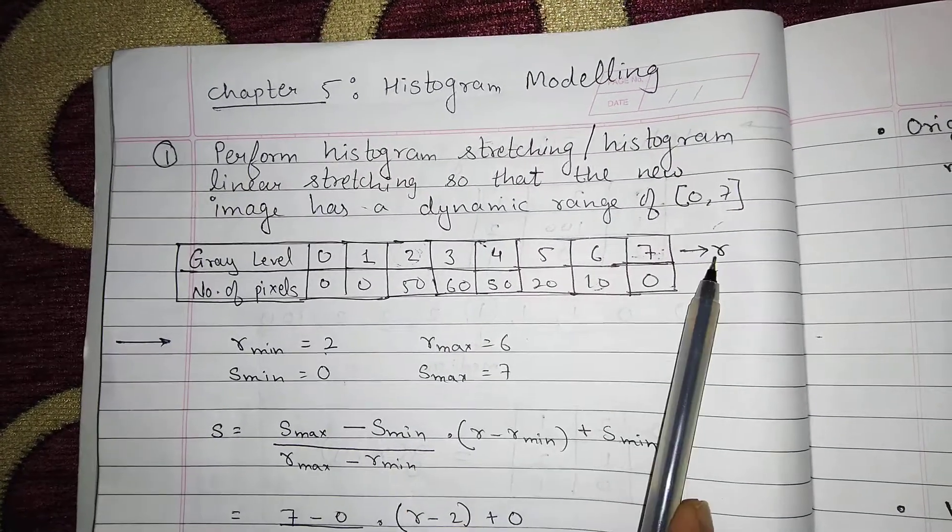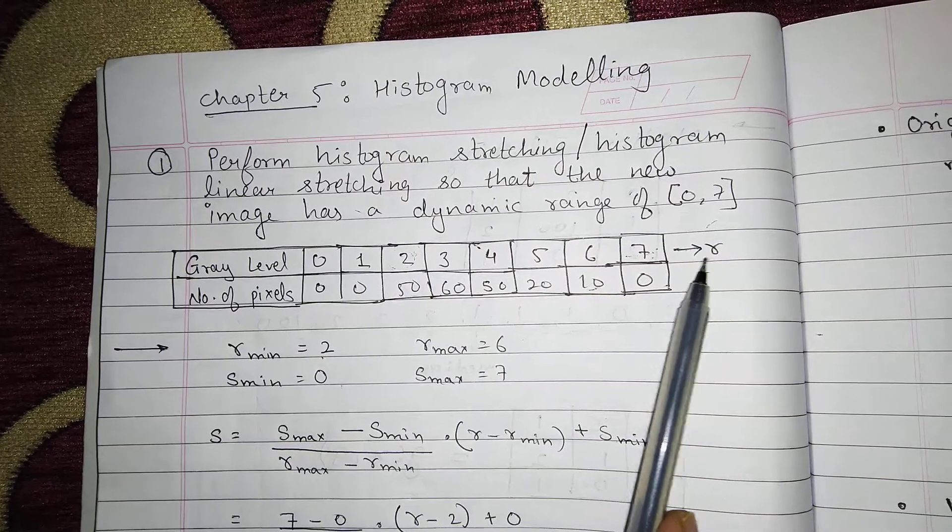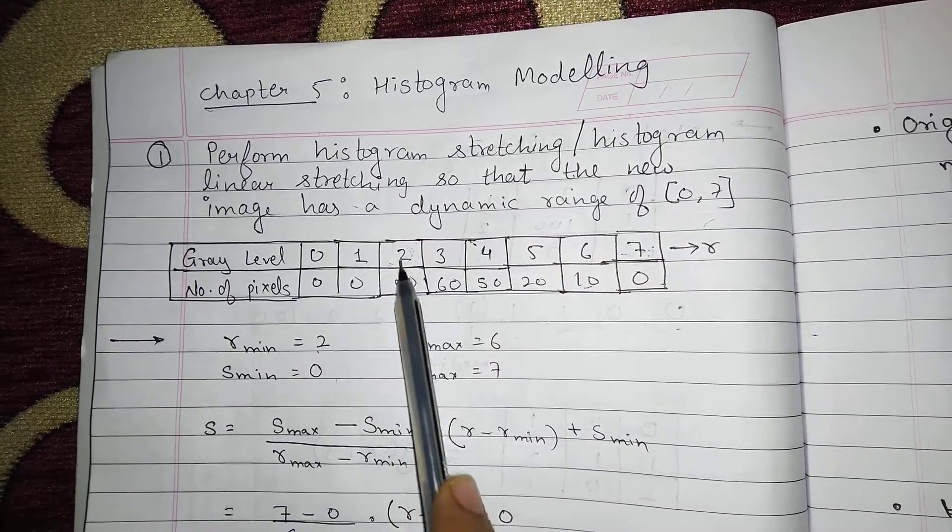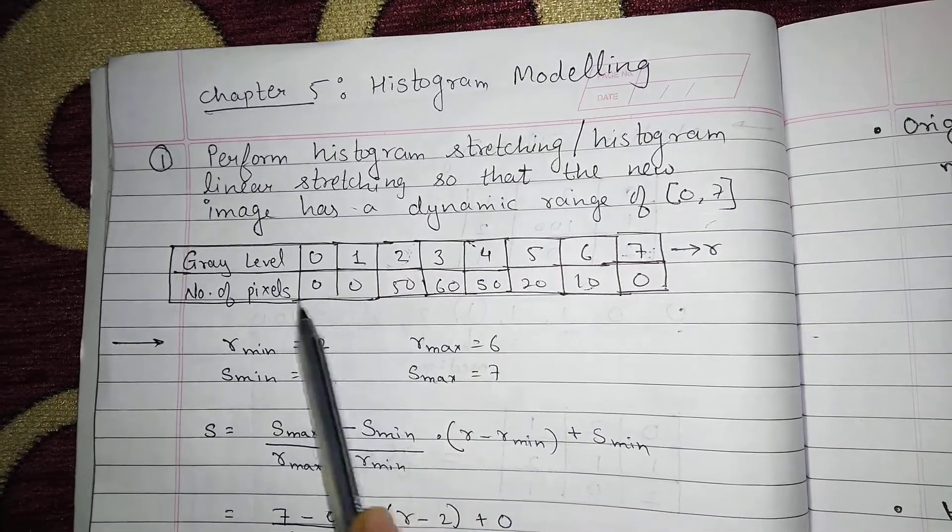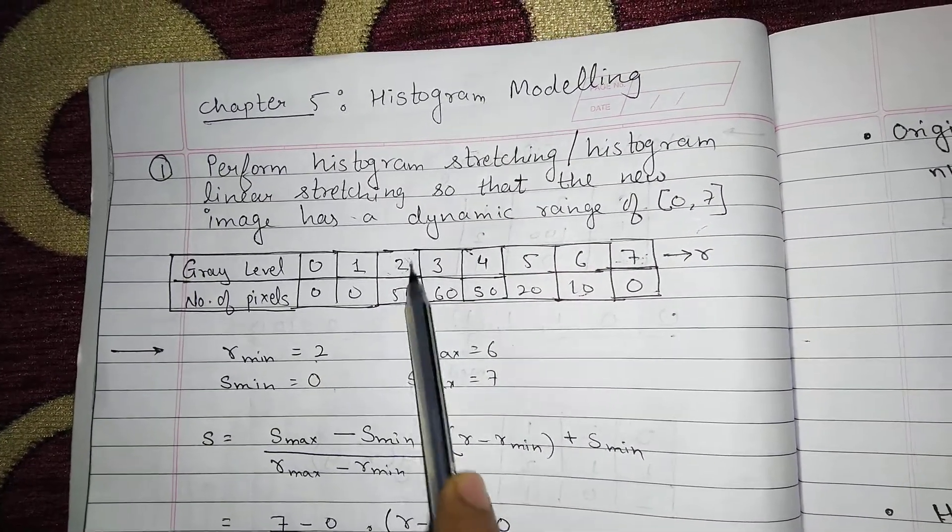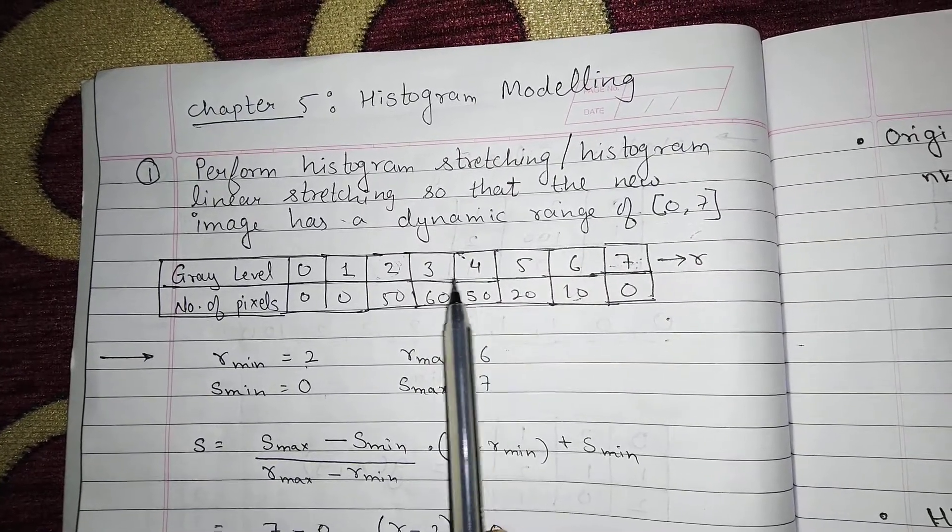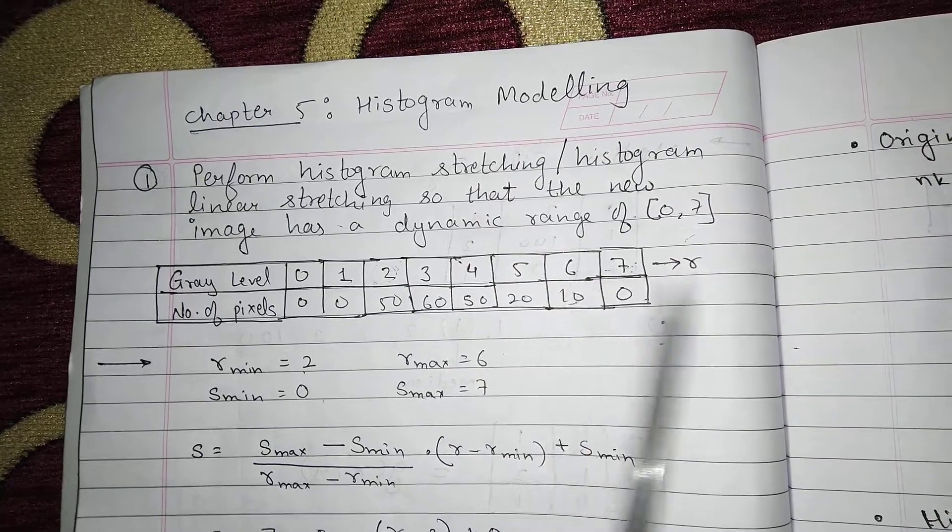This gray level is nothing but my R value. The minimum R value at which the value is present, that is it is not 0, is 2 because at 2 it is 50, before that it is 0. So R minimum is 2 and the maximum R till which the value is present and it is not 0 is 6.